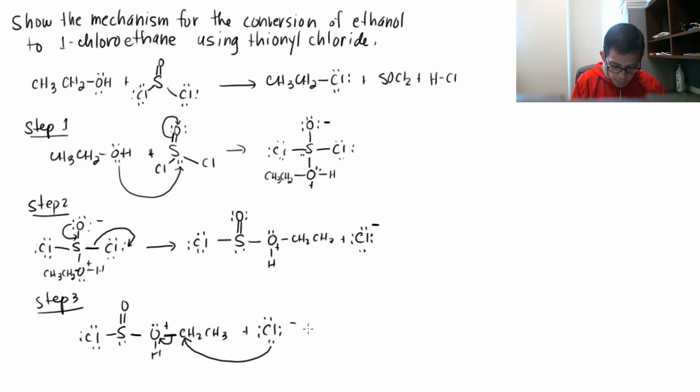So when that happens, this is what you get. S double bond O, Cl, O, two lone pairs, H, plus ClCH2CH3, and now we have formed our chloroethane which is our product. Perfect.